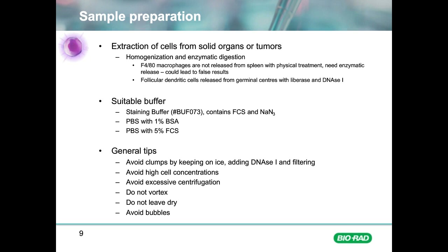Because flow cytometry relies upon a stream of single particles passing through the laser, it is very important to avoid cell clumps. To prevent clumping, it is advisable to keep all media and wash buffers at 4°C and keep the cells on ice as much as possible. This will help slow down cell metabolism and reduce necrosis and apoptosis. Another method of preventing cell clumping is to include DNase I or EDTA in your resuspension buffer.